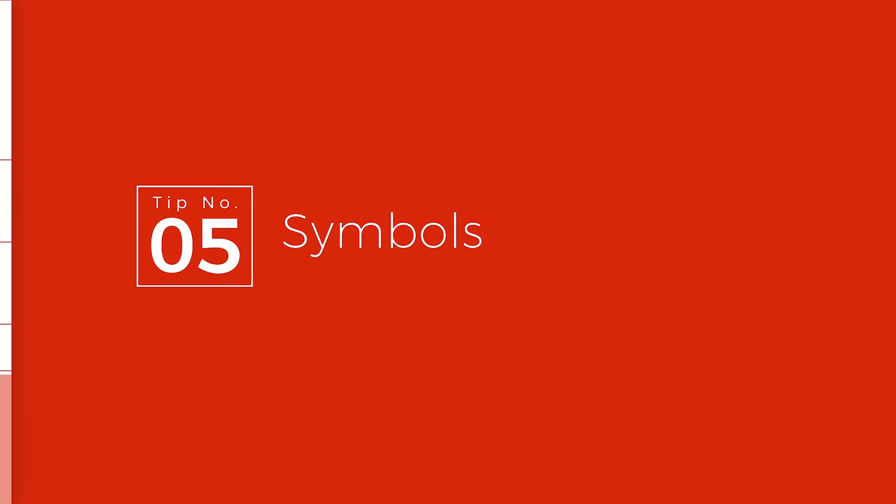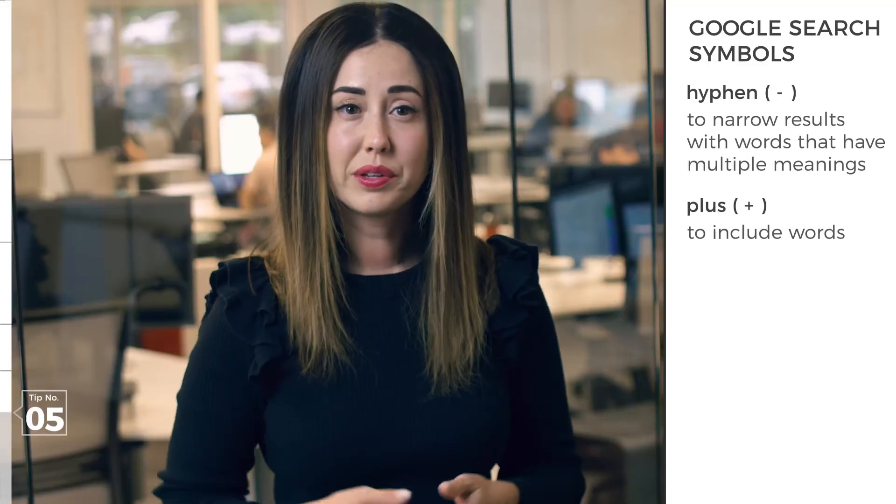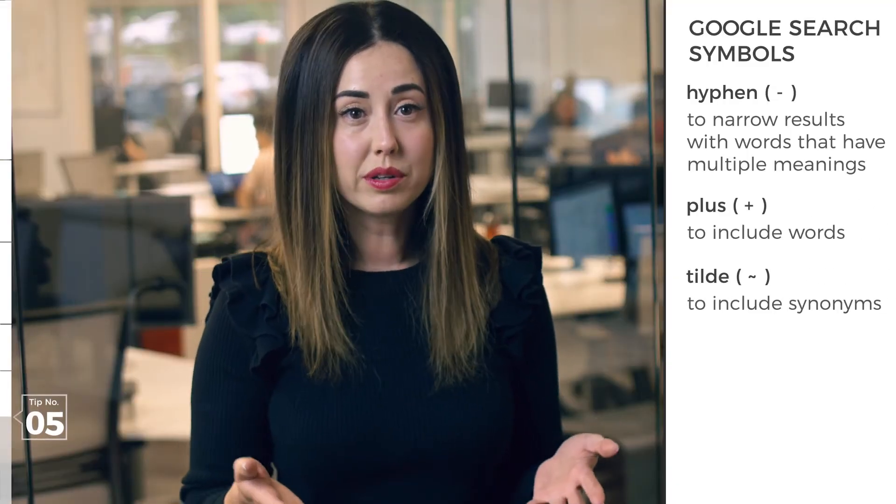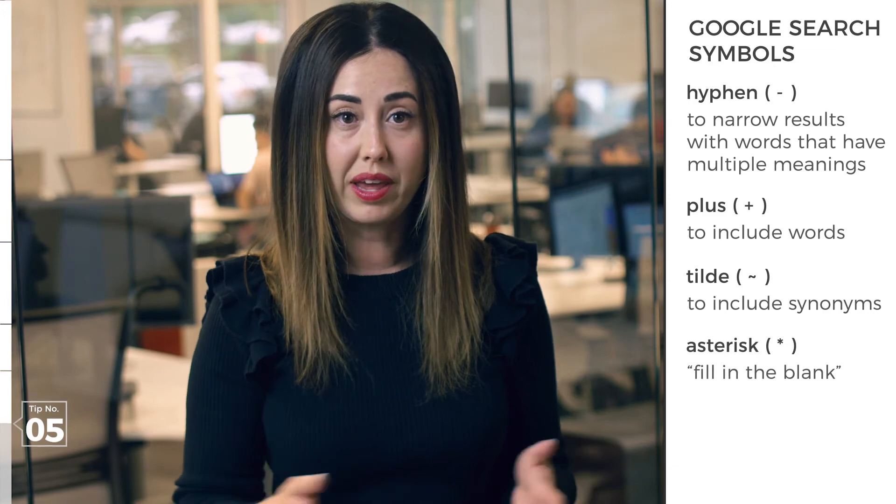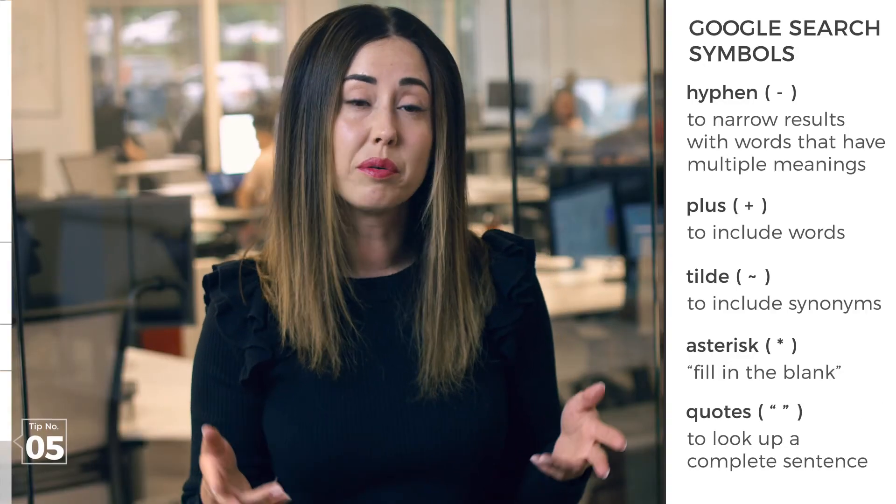Number 5: symbols. Take it up to the ultimate level by adding in the appropriate symbol to your search query. Use the hyphen to narrow results with words that have multiple meanings — for example, when you're searching for the animal cat and you don't want info about the bulldozing company. Plus to include words, tilde to include synonyms, asterisk for fill-in-the-blank — for example, "Glasgow is the * capital of Europe." Quotations to look up a complete sentence.